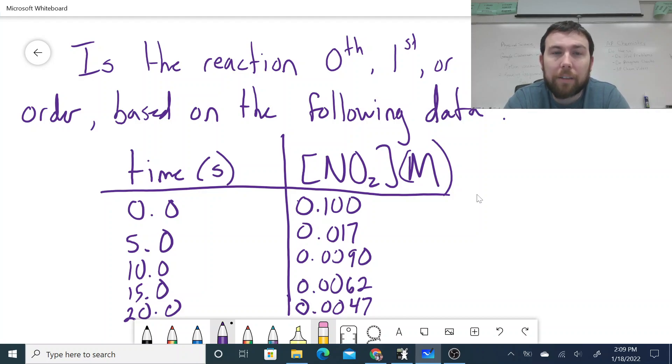Again, the big part here is just remembering what are the button clicks that we need to have on our calculator so that we can plot this information quickly, effectively, and then look at that information so we can get to our answer. So let's take a look at the following example. It asks us, is the reaction zeroth, first, or second order based on the following data? You've got your time that's been given in seconds on the left, and then you've got your concentration with regards to this reactant NO2 on the right.